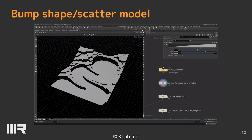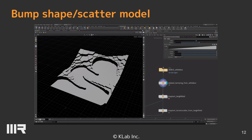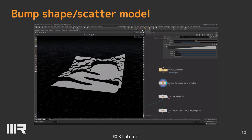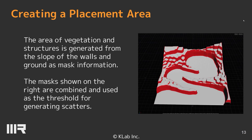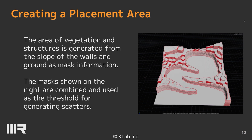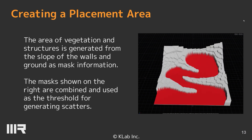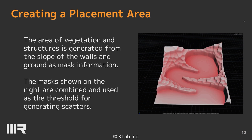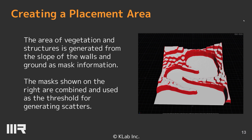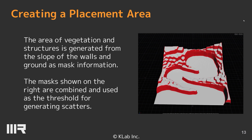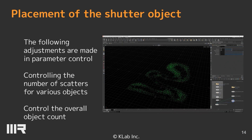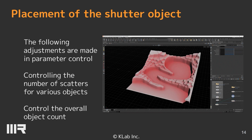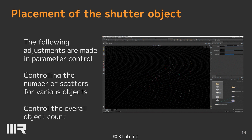Altitude variation and height variation are displayed in numerical values, and the amount of change can be adjusted in a linear graph. The area of position and structure is generated from the slope of the walls and ground as mask information. The masks are combined and used as the threshold for generating scatters. In parameter control, you can control the number of scatters for various objects and control the overall object count.